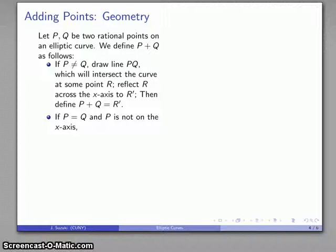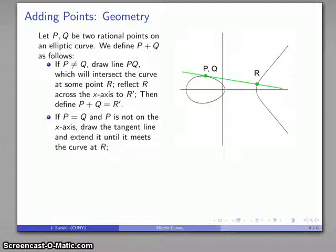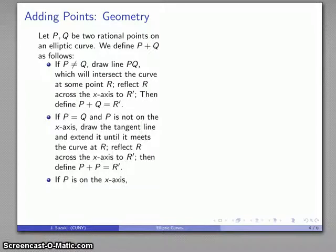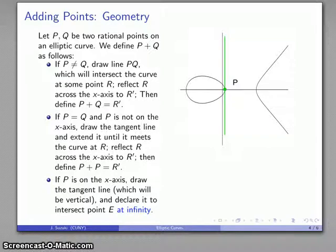If p equals q and p is not on the x-axis, I define the tangent line and extend it until it meets the curve at r, then reflect it across the x-axis to r', and define p + p to be r'. For the special case where p is on the x-axis, the tangent line is vertical. I define a new point e — the point at infinity — and that is what I'll define as p + p in the case where p is on the x-axis.